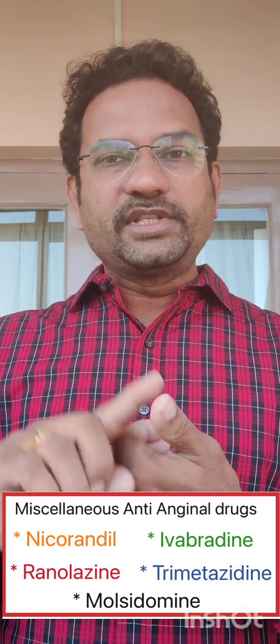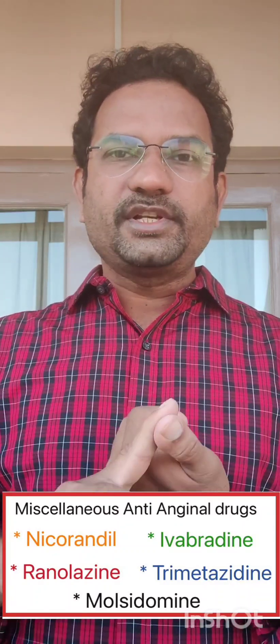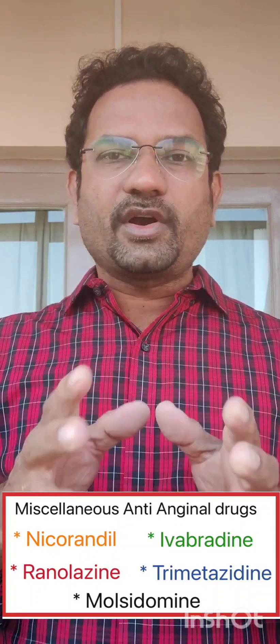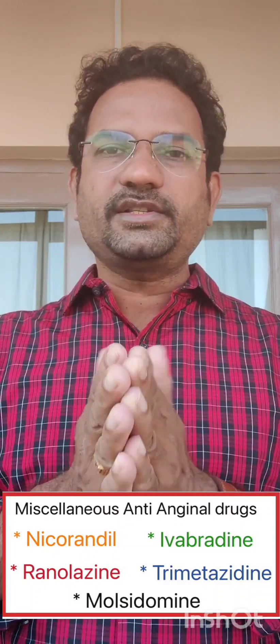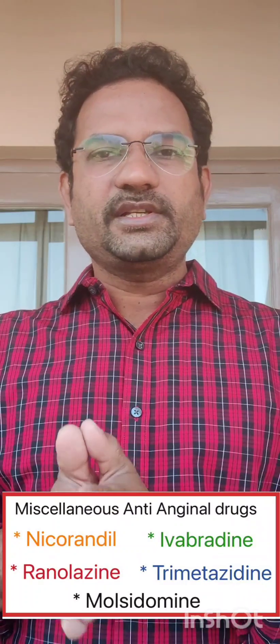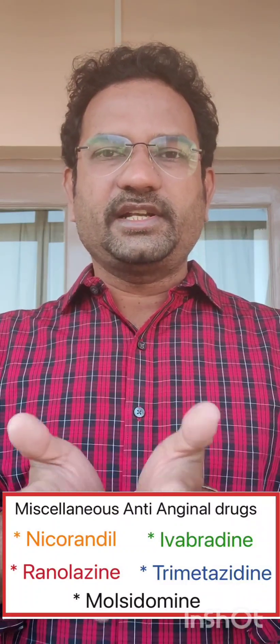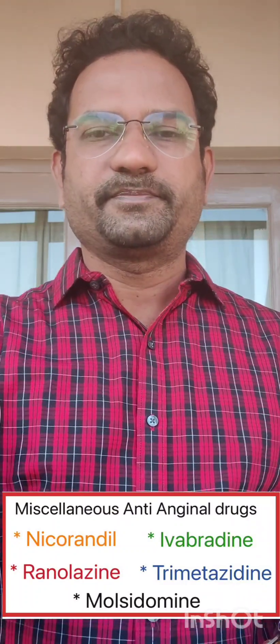Last one — molsidomine. Molsidomine is a direct non-nitric oxide releaser and causes vasodilation. So all these are anti-anginal agents. All the best.